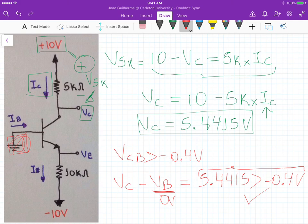Now this is basically saying that VCB equals to VC, which means that 5.4415 should be greater than minus 0.4 volts, which is OK from this circuit that we have here. So indeed it's operating in the active mode region and the values of IC, IE, IB, and VC are calculated and those are the answers that we get for this circuit here.